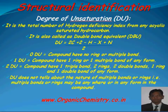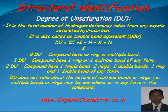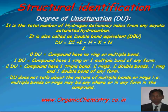If DU is 2, the compound may have one triple bond, two rings, two double bonds, or one ring and one double bond of any form. If a triple bond, it may be carbon-carbon or carbon-nitrogen. If two rings, they may be carbocyclic or heterocyclic. If two double bonds, they may be carbon-carbon, carbon-nitrogen, carbon-sulfur, or any combination. DU does not tell about the nature of the multiple bond or ring — the multiple bond or ring may be anywhere or in any form in the compound.